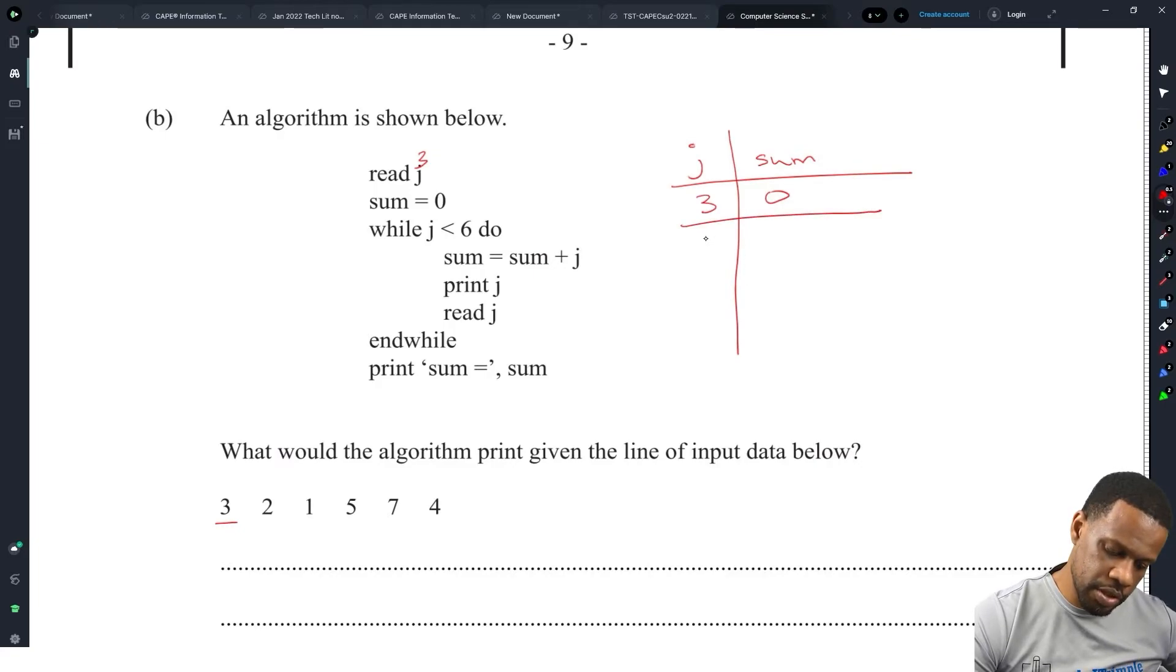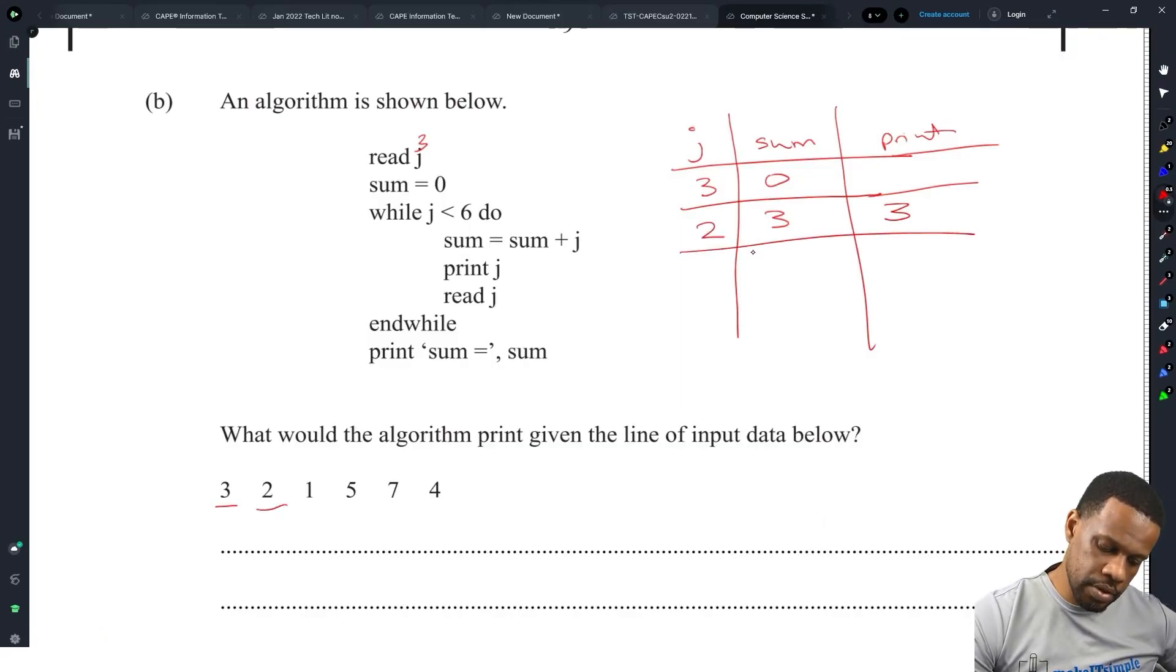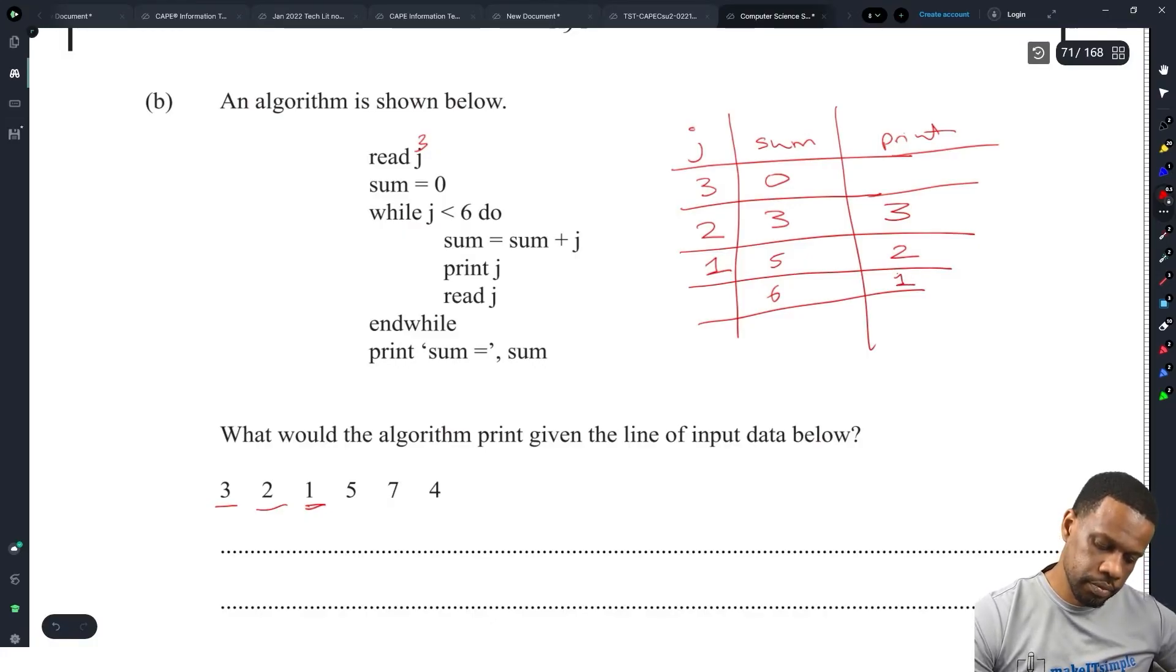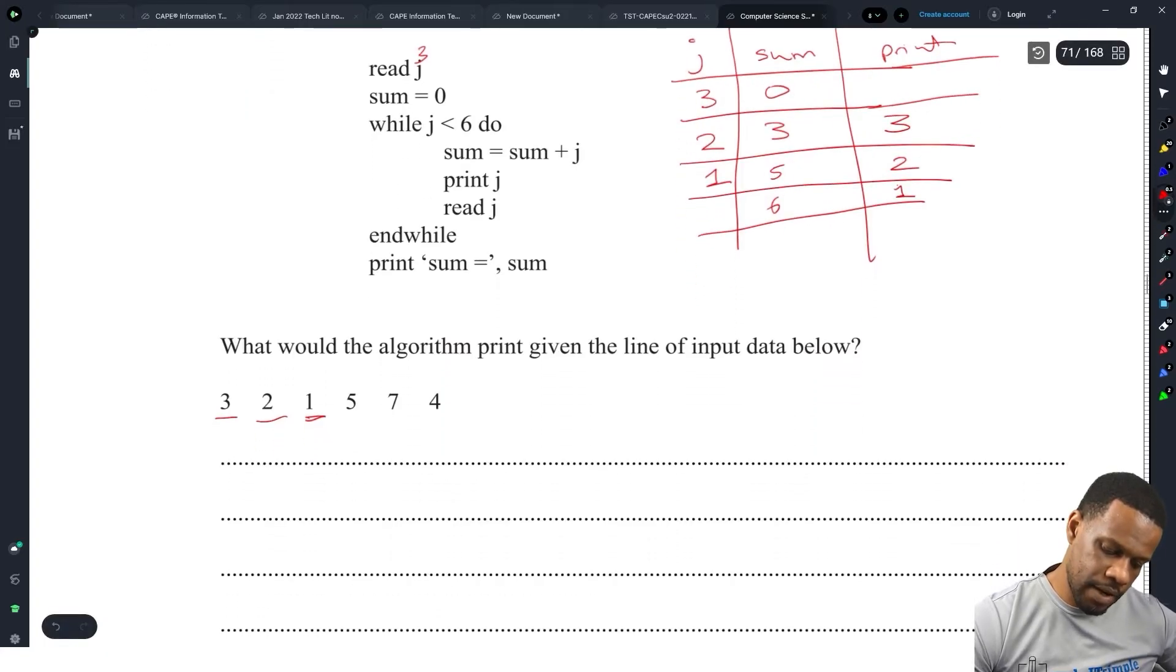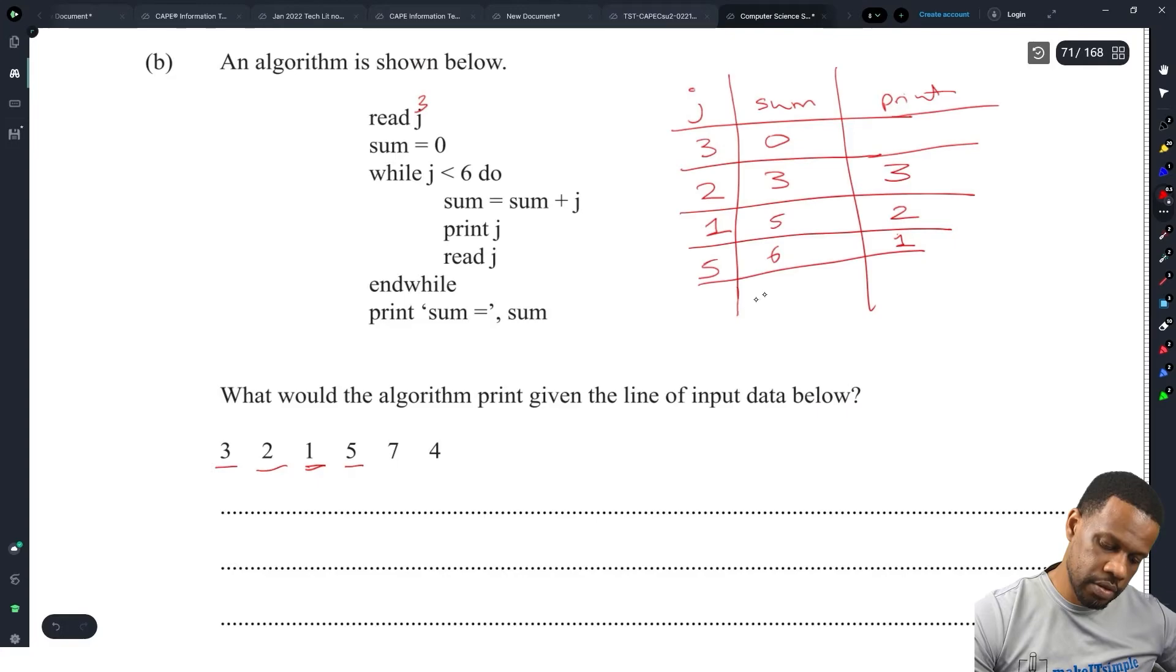Alright so j is three, sum will be zero, that'll start us off. Then we say while j is less than six, is j less than six? Yes. Sum is equal to sum plus j, so three plus zero will be three. Print j. That's the first time. Then we'll read a new j, we'll get the two. Two is j less than six? Yes. So sum is equal to sum plus j, three plus two will be five. Print j which will be two.